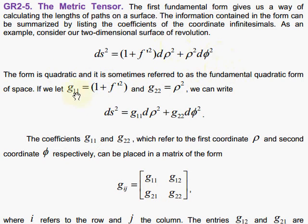Now if we let g sub 1,1 be the coefficient in front of the first coordinate squared and g2,2 be the coefficient in front of the second coordinate squared, we can then write this in a compact form: ds squared is g1,1 d rho squared plus g2,2 d phi squared.